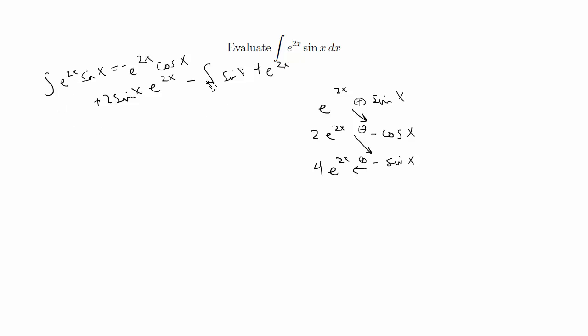And you can see that when you're solving this problem, you can pull out the 4, and since this is the same as the left hand side of the equation, you can move it to the left. So you're going to have 5 e to the 2x sine x equals negative e to the 2x cosine x plus 2 sine x e to the 2x. And to simplify, you can divide 5 on both sides, so you're going to have negative 1 fifth e to the 2x cosine x plus 2 fifths sine x e to the 2x, and that can be plus c, and that's your final answer.